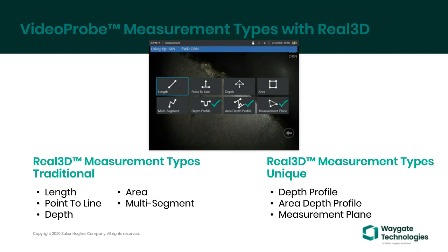Recently added: a depth profile where two mathematical planes are established on the surface and you can evaluate the contours or surface profiles and see the height above or below the plane. Area depth profile makes a similar measurement but over very large areas on two concentric planes. And measurement plane projects a plane into space and allows you to measure upon it—a facsimile of where the material would have been—for evaluating missing material.